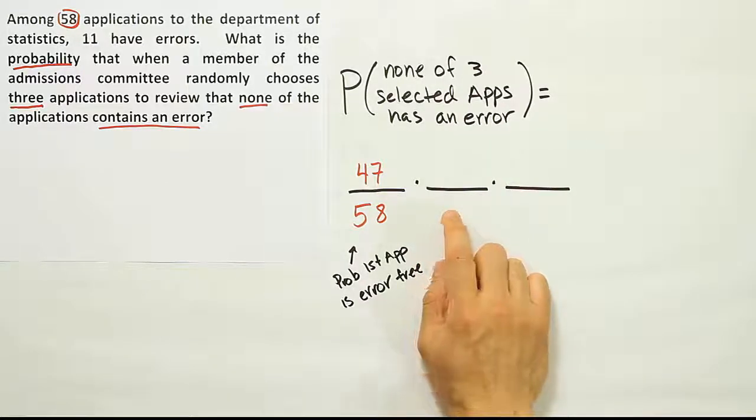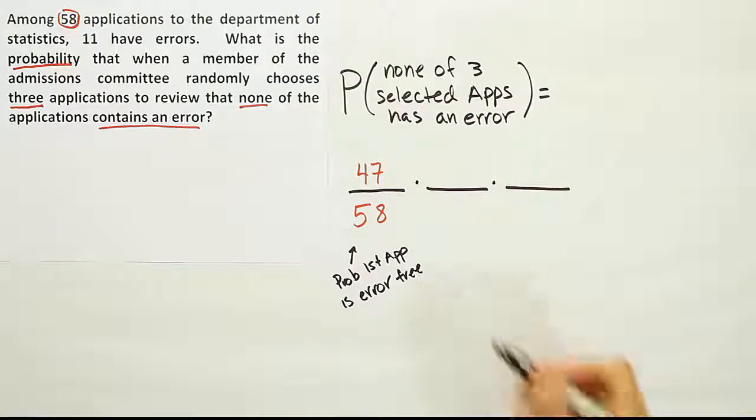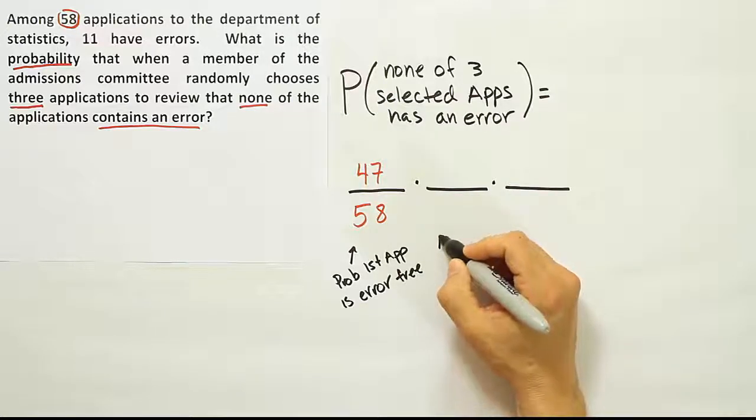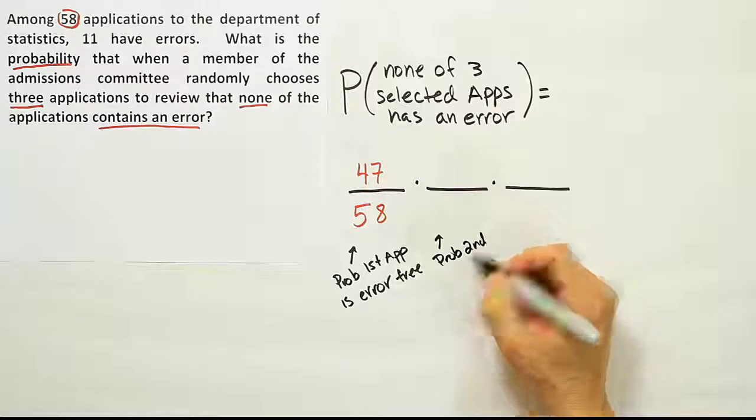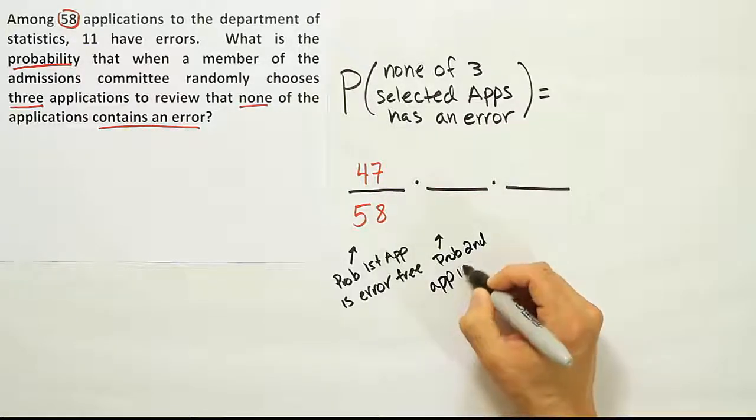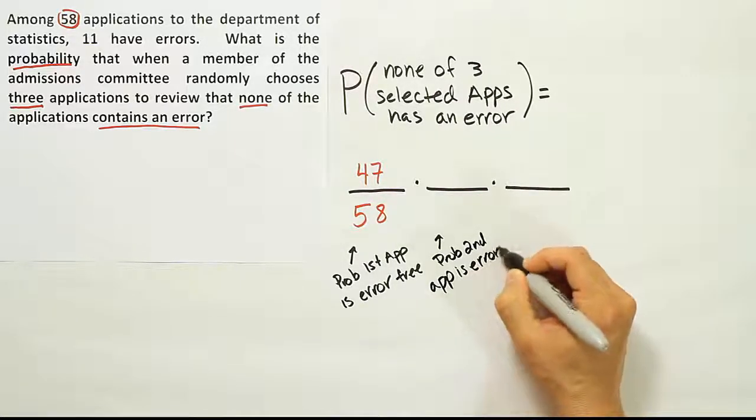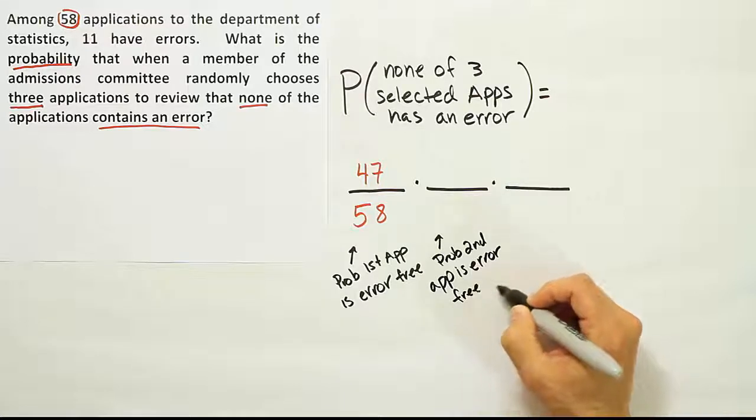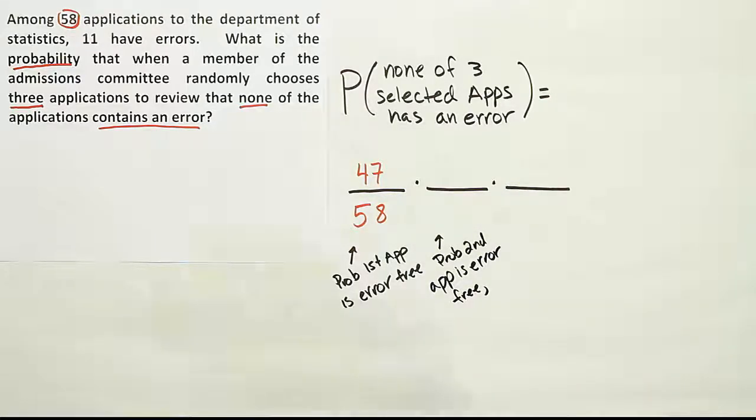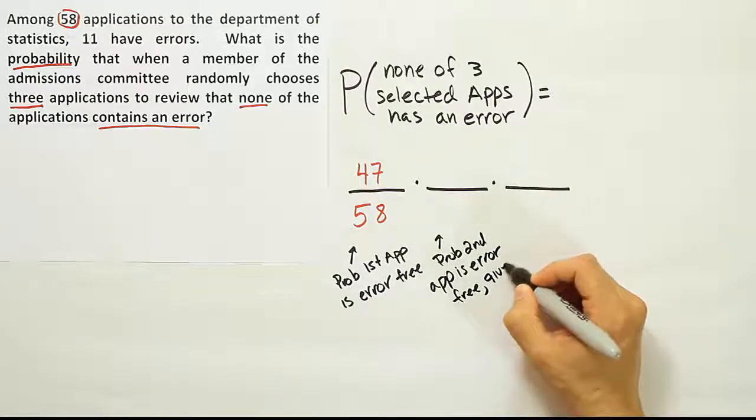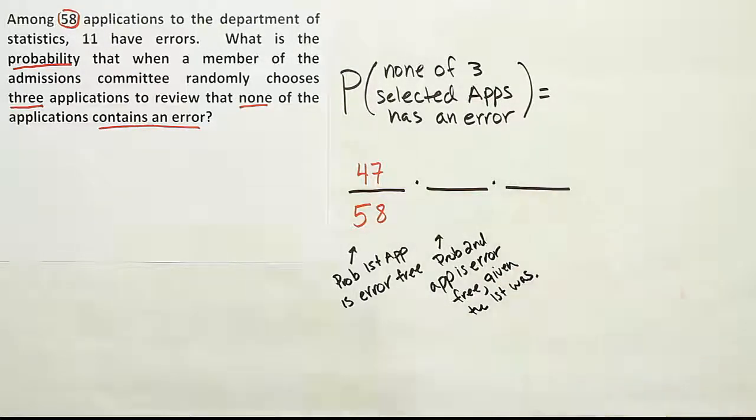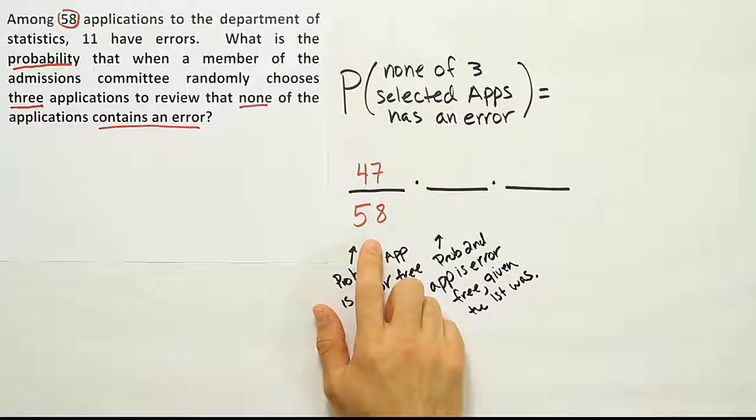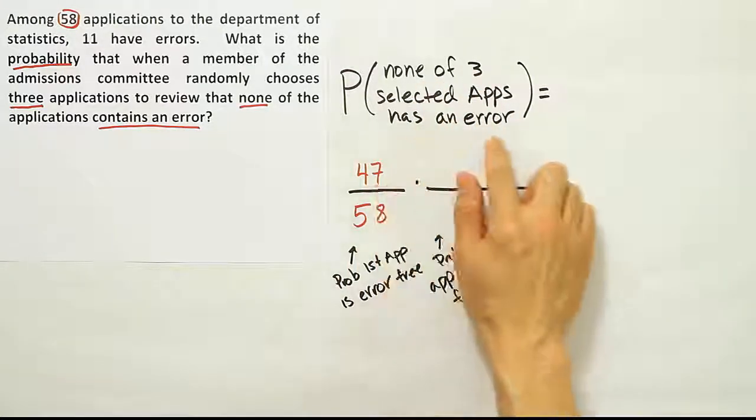Now my next fraction. It's the probability the second app is error free. But I have to add something here. I'm going to say given the first was error free, because I'm assuming that I'm going to grab three applications that none of them has an error.